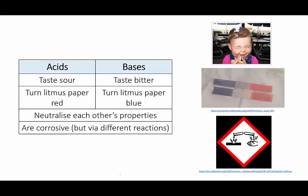Acids taste sour, whereas bases taste bitter. Acid-base indicators will change colour depending on which type of chemical they come into contact with, the classic example being litmus, which turns red in an acid and blue in a base.